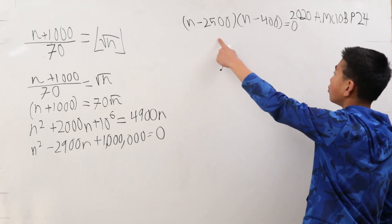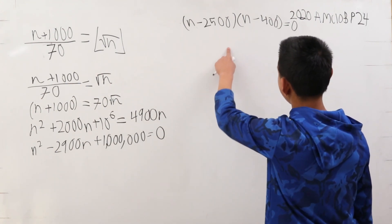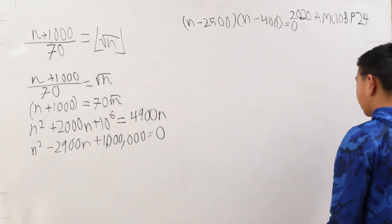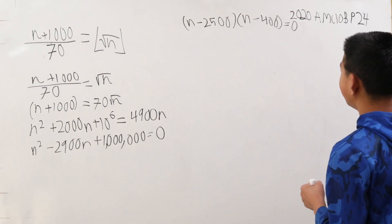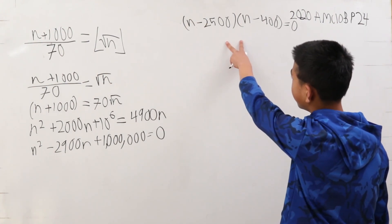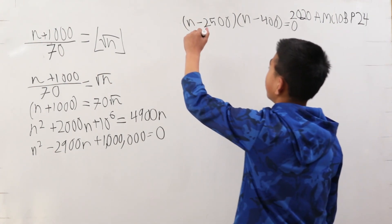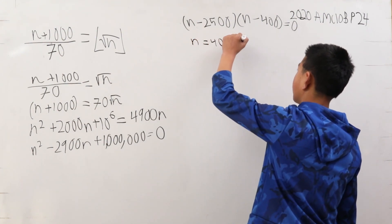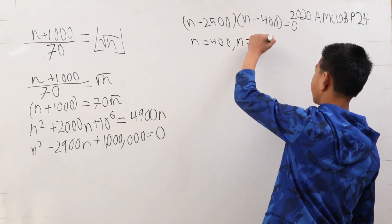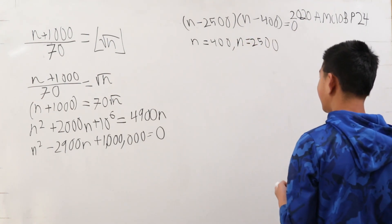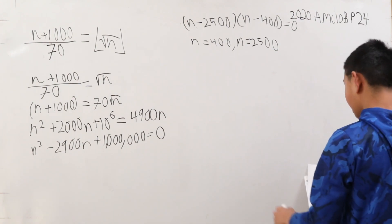We have two close values of n, where now we can test the values that can be divided by 70 around these two numbers, just to check if they work. So, there's n is equal to 400, and n is equal to 2,500. We have to keep on testing values of n near these numbers.